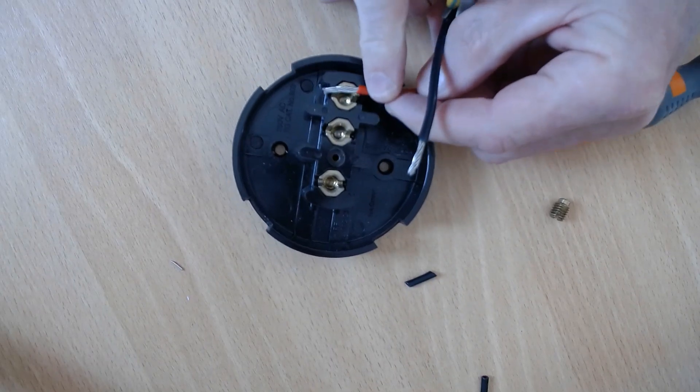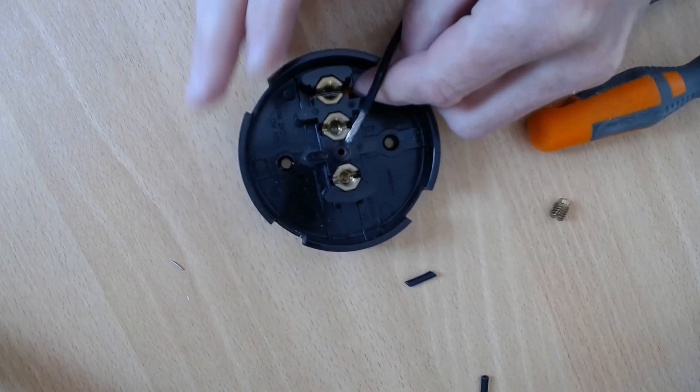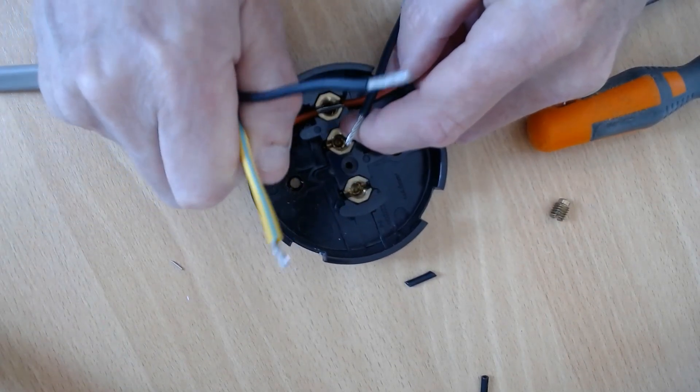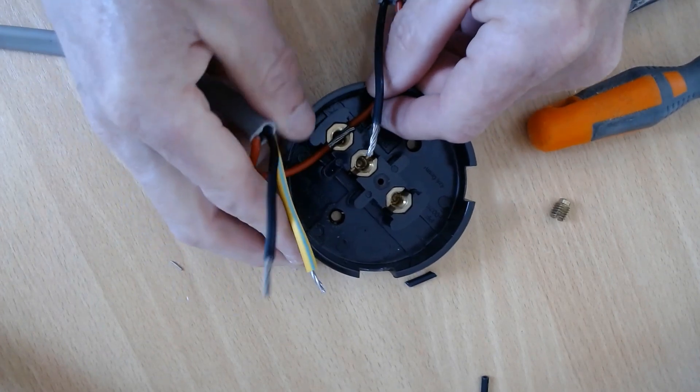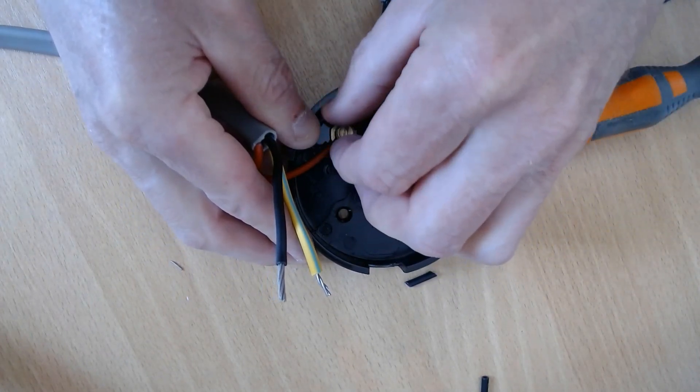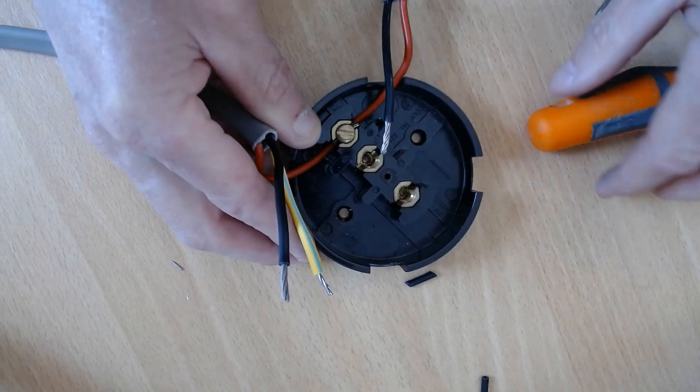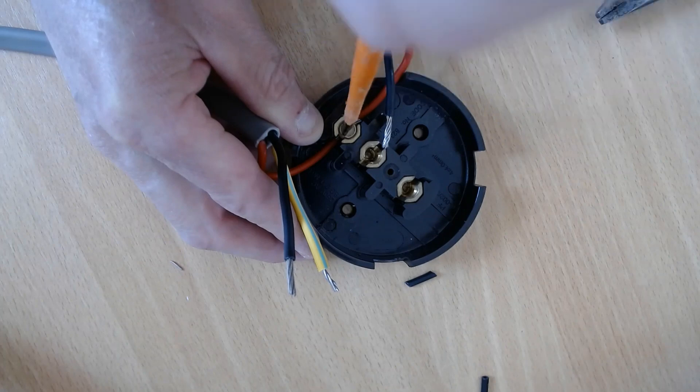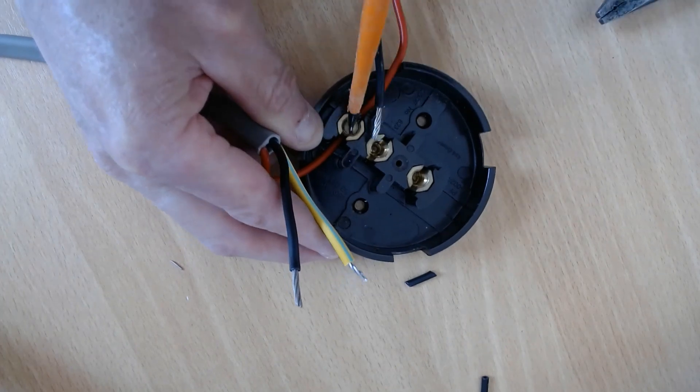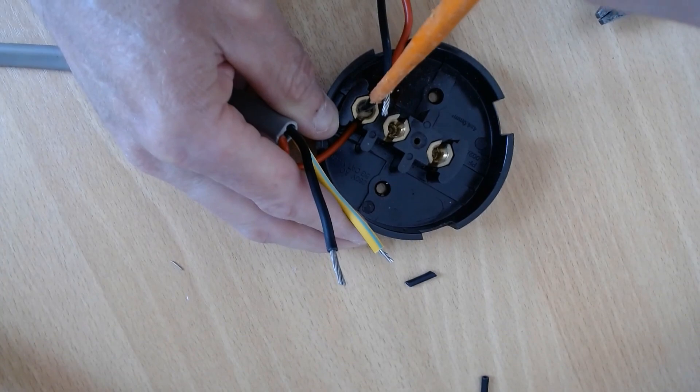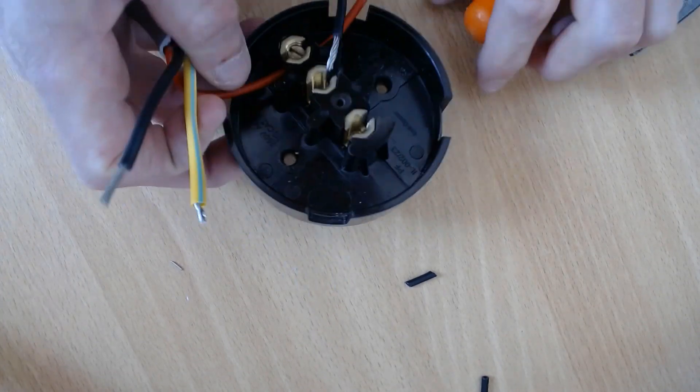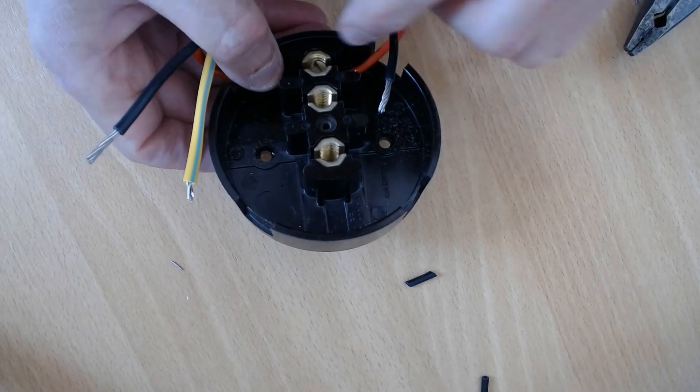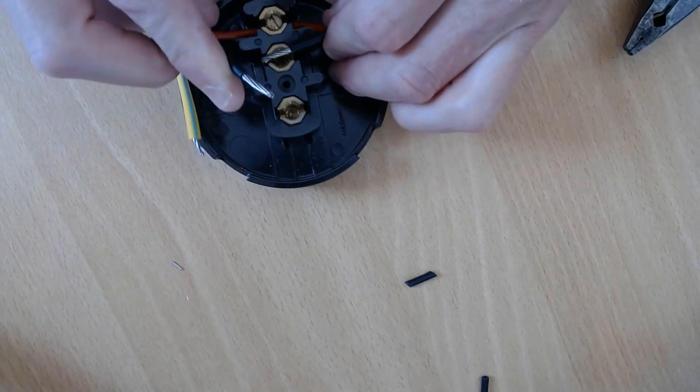Get your live, put that one in there like that. Obviously it's quite simple, you know. Red to red, black to black, earth to earth. And then just screw, making sure that the insulation's not under the screw, it's just purely the bare wires.